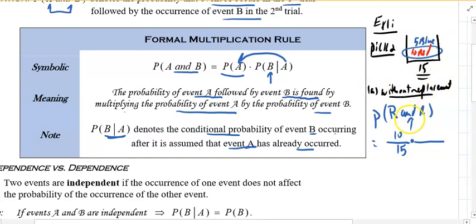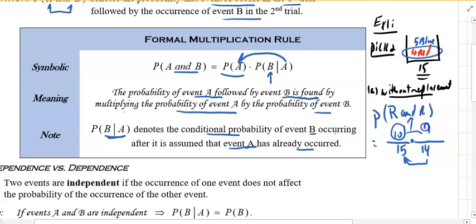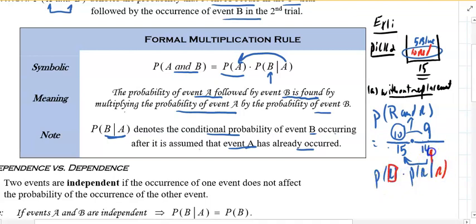Without replacement means I held that marble in my hand. When it's time to pick the second, there are only 14 left — do you see that the number changed? And how many are red? The fact that I already have a red in my hand tells me that in the jar there are 9 left. So the probability of the simple event red is 10 out of 15, but given I already have this red in my hand, the probability changed.